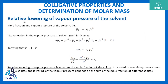The vapor pressure of the solvent is p1 = x1 × p1°. The reduction in vapor pressure is p1° minus p1. Substituting p1 = x1 × p1° and factoring out p1°, and using the relation x1 + x2 = 1, we get delta p1 = x2 × p1°, so delta p1 divided by p1° equals x2.